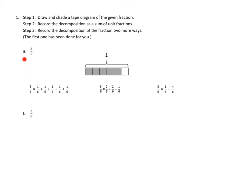In 1a we're asked to draw 5 sixths. They went ahead with their tape diagram and drew 1 bar to represent 1. We're working with 6, so they divided this up into 6 parts — 1, 2, 3, 4, 5, 6 parts — and then they shaded in 5 of them: 1, 2, 3, 4, 5. This shows us 5 sixths — 5 of the units, and the units are sixths.